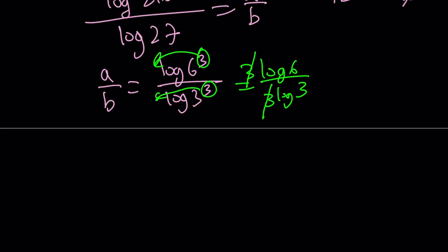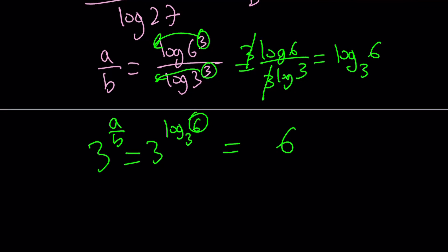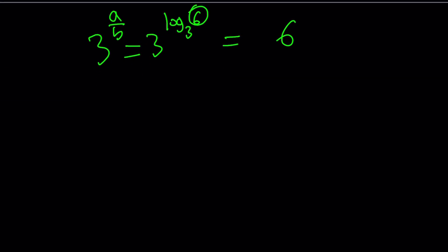So a over b is log6 over log3. That doesn't mean a is log6. We're finding 3 to the power a over b, which equals 3 to the power (log6 / log3). Using the change of base formula in reverse, log6 / log3 is log base 3 of 6. So 3 to the power (log base 3 of 6) equals 6, by properties of logs. This brings us to the end of the video.